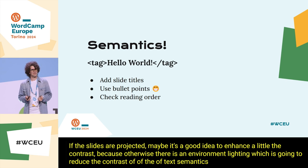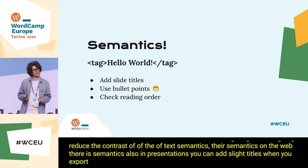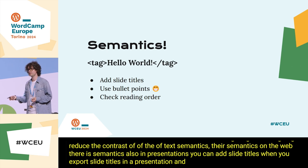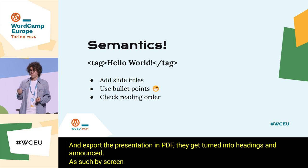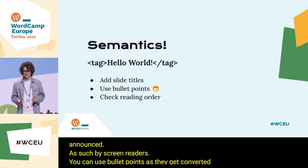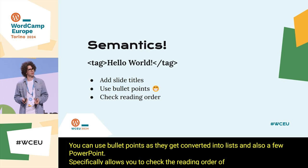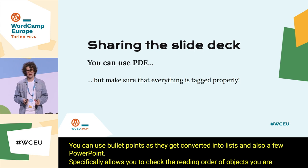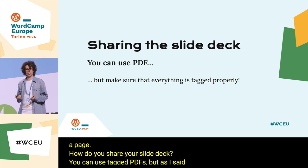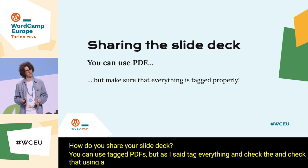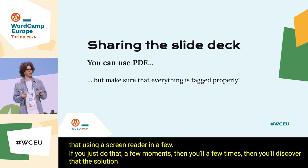Semantics. There are semantics on the web, and there are semantics in presentations too. You can add slide titles — when you export a presentation to PDF, slide titles get turned into headings and announced as such by screen readers. You can use bullet points, as they get converted into lists. PowerPoint also allows you to check the reading order of objects on a page. You can use tagged PDFs, but tag everything and check it using a screen reader. Doing that a few times, you'll discover how to make your presentation really accessible.